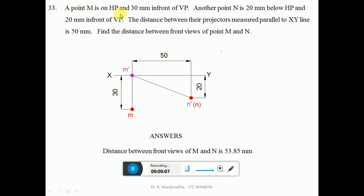A point capital M is on HP and 30 mm in front of VP. Another point capital N is 20 mm below HP and 20 mm in front of VP. The distance between the projectors measured parallel to X Y line is 50 mm. Find the distance between front views of point capital M and capital N.